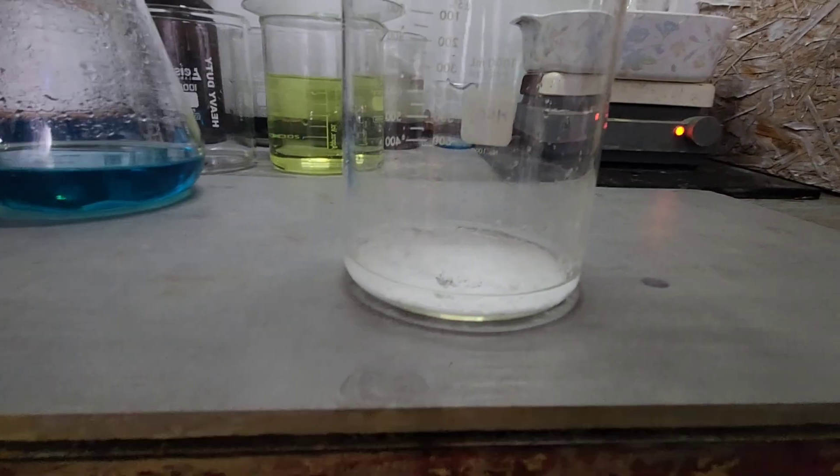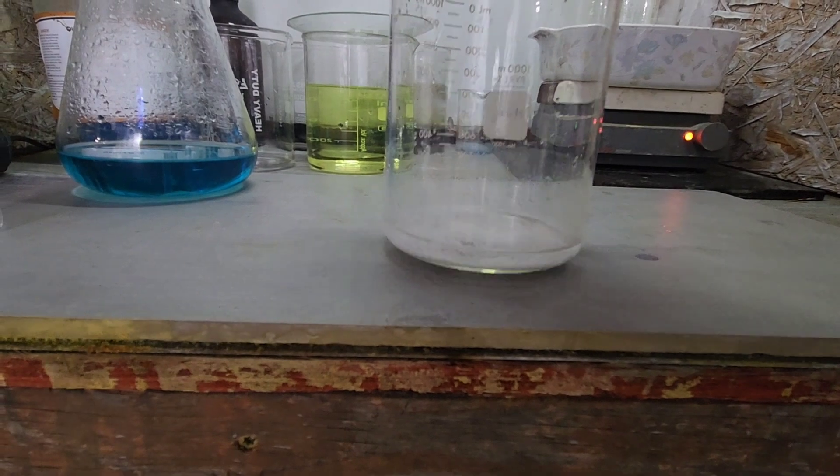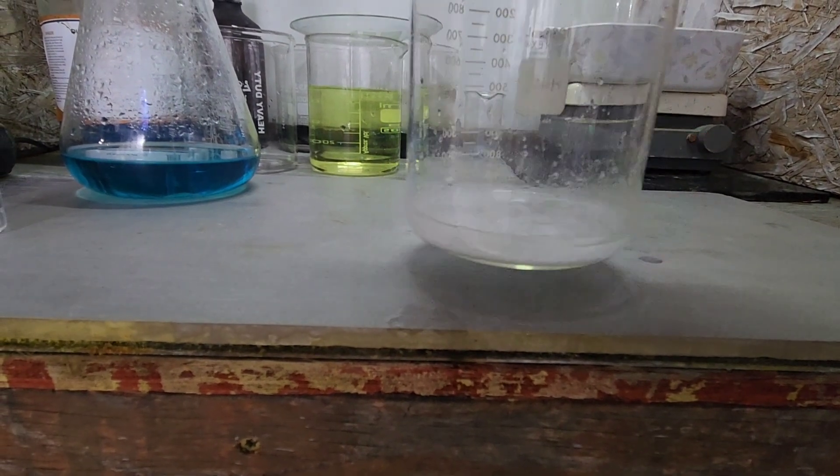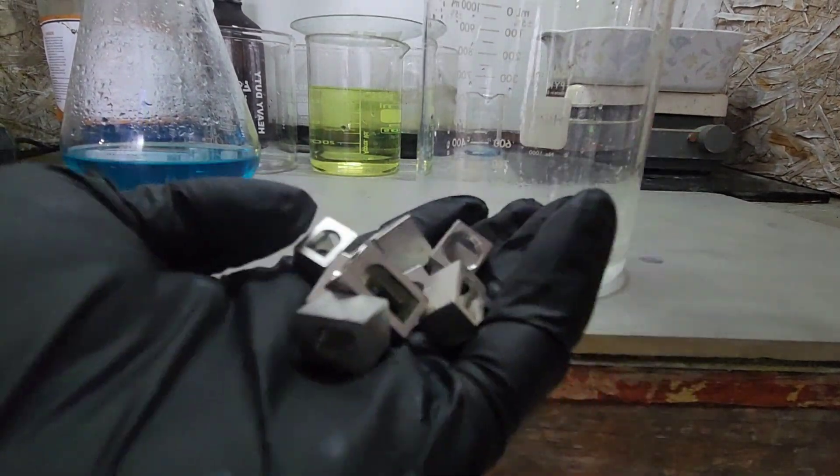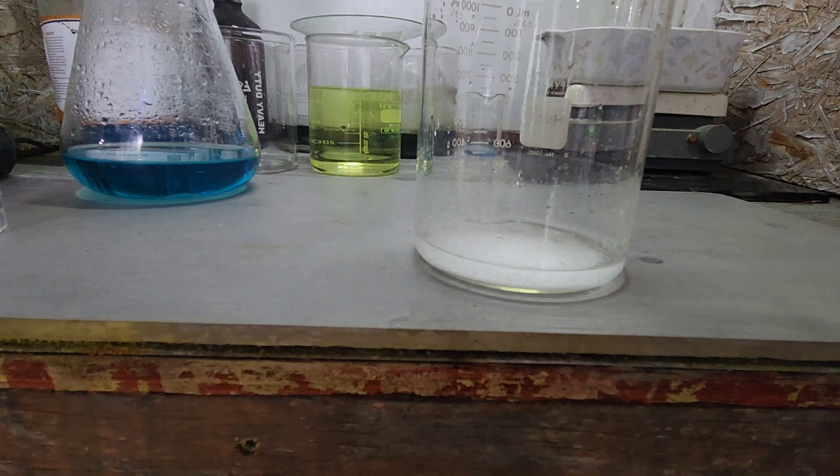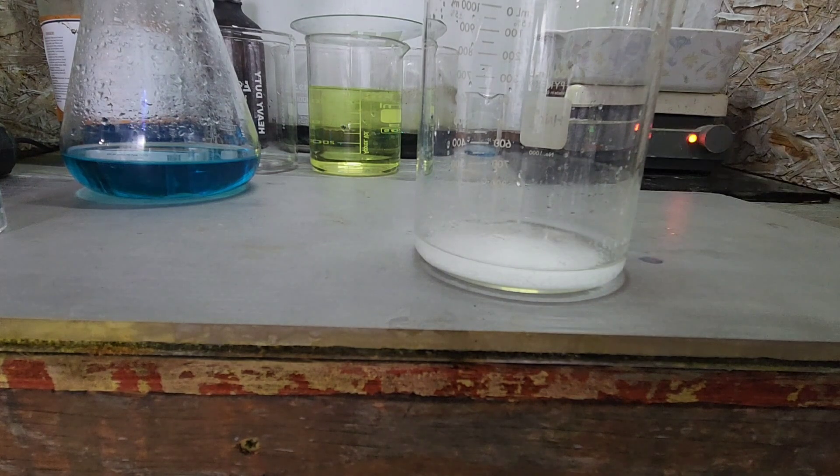Today we're going to attempt to convert this silver chloride back to metallic silver with a little bit of aluminum and some hydrochloric acid. Right now it's sitting in a little bit of distilled water.